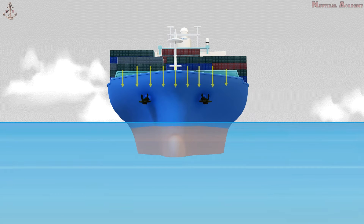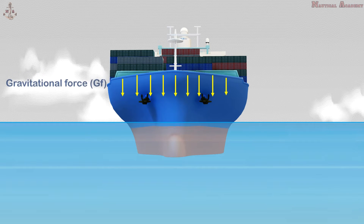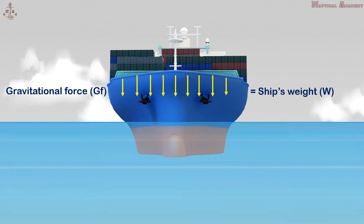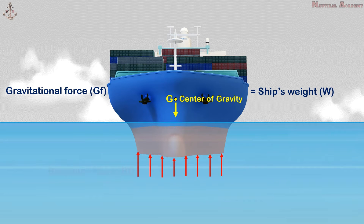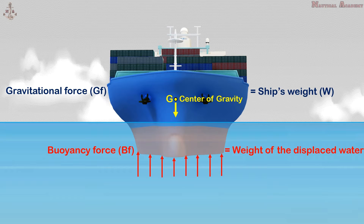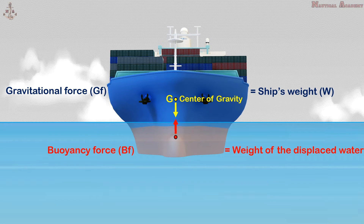A vertical downward force known as the gravitational force, GF, which is equivalent to the weight of the ship, symbolized as capital W, acting vertically downward through the center of gravity, with symbol capital G. Next is the upward vertical force known as buoyancy force, BF, which is equal to the weight of the water displaced by the immersed ship, acting vertically upward through the centroid of the displaced volume of water, called the center of buoyancy, symbolized as capital B.